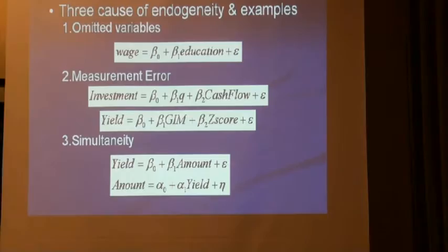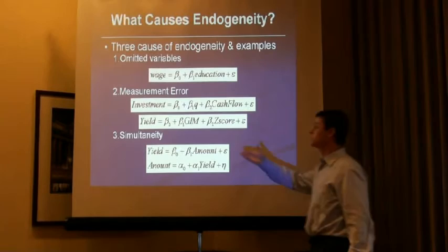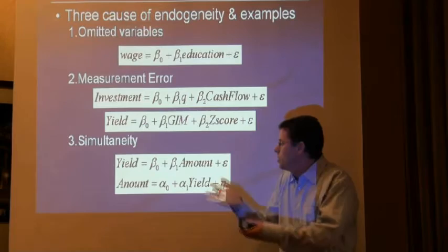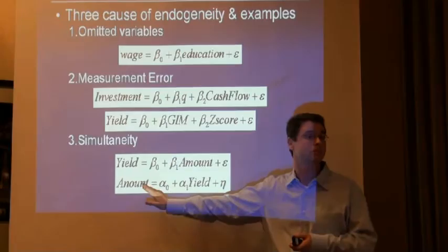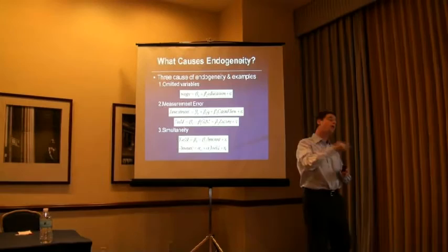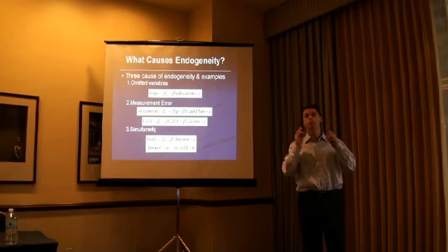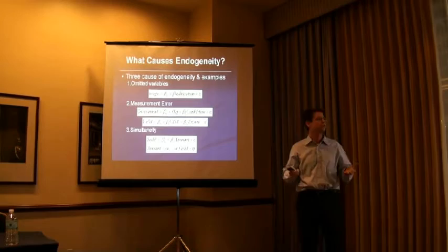And finally, simultaneity. Everyone remembers econ 101 — supply and demand. In a finance setting: price and amount of a loan. Clearly, the price is a function of the amount and the amount is a function of the price. You need some sort of instrument to break this simultaneity, or you can't even estimate it. So — omitted variables, measurement error, simultaneity. That's what causes violations of the no-correlation between x and epsilon, what ruins our OLS estimates of the parameters, and what prevents us from drawing compelling inferences.